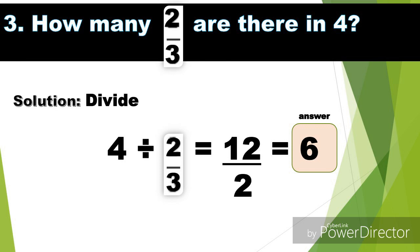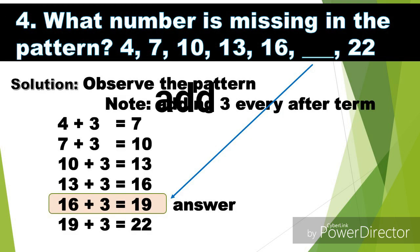Problem number three: how many 2/3 are there in 4? The solution is to divide: 4 divided by 2/3. We can use cross multiplication method. So 4 times 3 is 12, and then we have 2 because the denominator of 4 is 1, so 2 times 1 is 2. Then we have 12 over 2, or 12 divided by 2. The answer is 6.